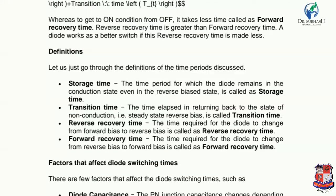Now let us do a quick recap of definitions. Storage time: the time period for which the diode remains in the conduction state even in the reverse bias state. Transition time: the time elapsed in returning back to the state of non-conduction. Reverse recovery time: the time required for the diode to change from forward to reverse bias. Forward recovery time: the time required for the diode to change from reverse bias to forward bias.